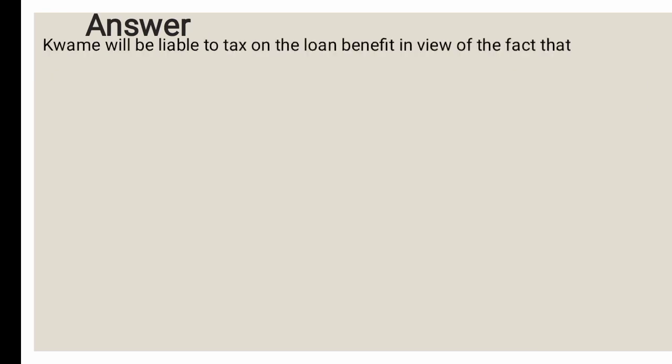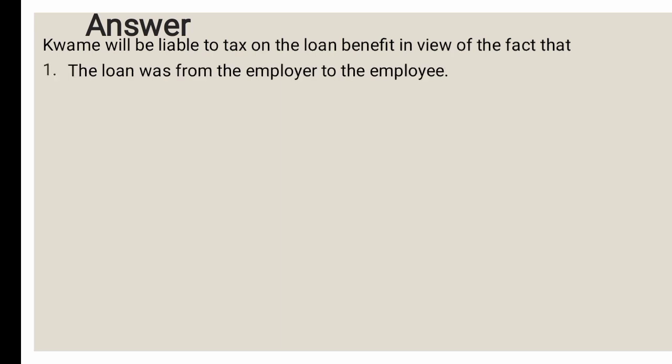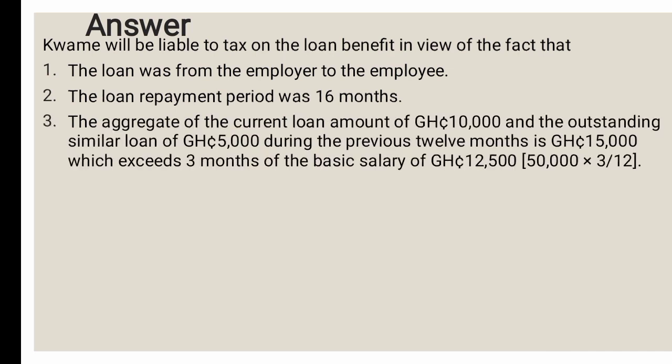Kwame will be liable to tax on the loan benefit. The loan is from the employer to the employee. The repayment period is 16 months, exceeding 12 months. The aggregate of the current loan of GHS 10,000 and the outstanding similar loan of GHS 5,000 is GHS 15,000. Three months of basic salary = GHS 50,000 × 3/12 = GHS 12,500. Since GHS 15,000 exceeds GHS 12,500, all conditions are met and we quantify.